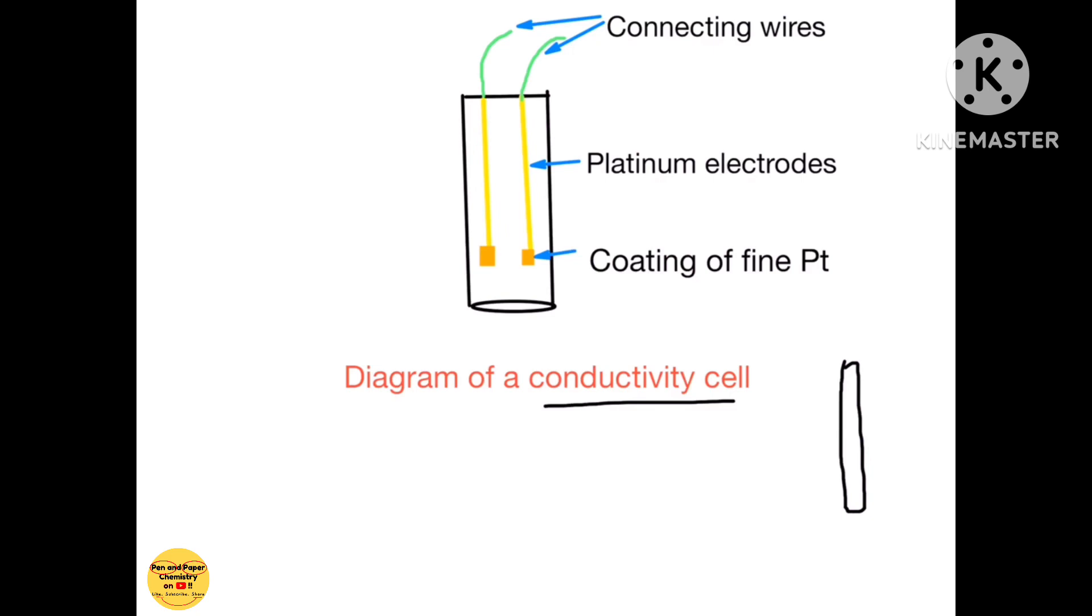So here again we have the coating of fine platinum, we have the platinum electrodes, we have the connecting wires and all of these are fused inside a glass tube. How and where do we use a conductivity cell? Let's do that. I hope you have a pen and paper in your hand so that you can practice these diagrams and practice their labeling as well.